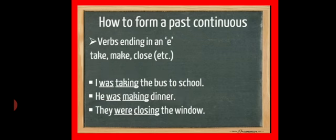Next is, if we have verbs which are ending in an e, then we will drop e. Like, if we have the verb take, make, close, we will omit, drop, remove it from there and add ing as usual in past continuous tense. Like I was taking the bus to school, he was making dinner, they were closing the window. Here take becomes taking with e dropped, making with e dropped, close with e dropped, ing added.